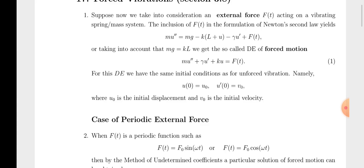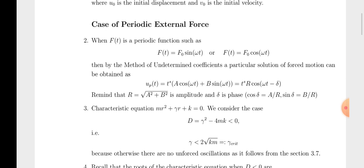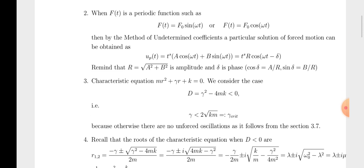By taking m·g equal to k·l, we simplify the equation of motion. Now for case one — periodic external force — we apply an external force f(t) as a periodic function such as f(t) = F₀·sin(ωt) or f(t) = F₀·cos(ωt). By the method of undetermined coefficients, the particular solution of the forced motion can be obtained.